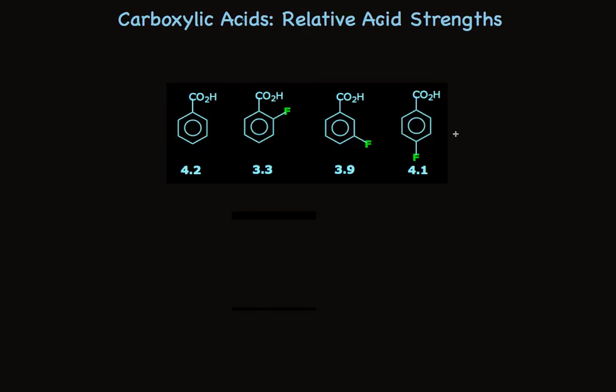The aromatic ring helps disperse negative charge. And so benzoic acid is stronger than acetic acid. When we attach an electronegative substituent to the ring, it makes the acid even stronger, as you would expect. The electron-withdrawing effect of fluorine in the ortho position is stronger than fluorine in the meta position. And when you put fluorine in the para position, it has an even smaller effect.